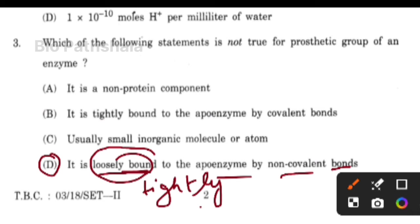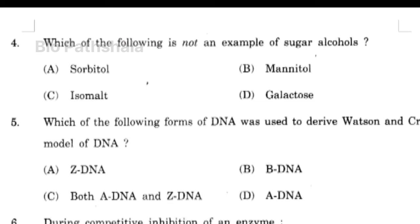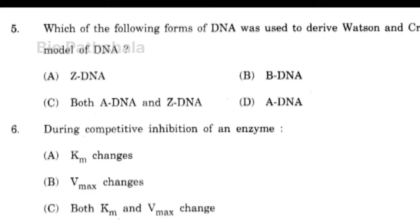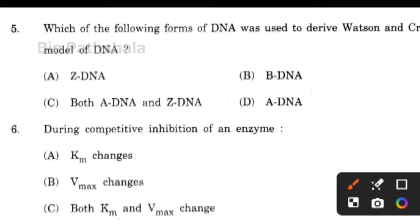Next question: which of the following is not an example of sugar alcohol? The correct option is option number D, i.e., galactose. Next question: which of the following forms of DNA was used to derive Watson and Crick model of DNA? That is B-DNA.